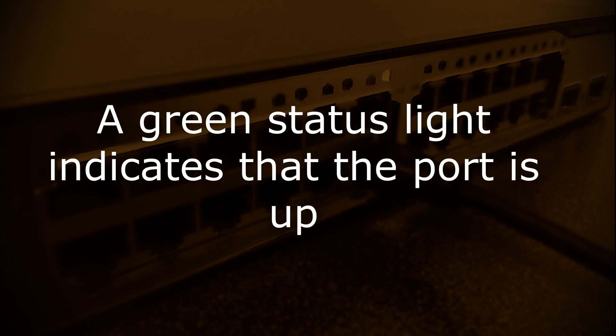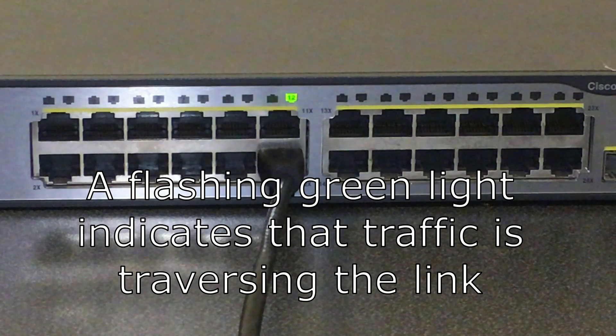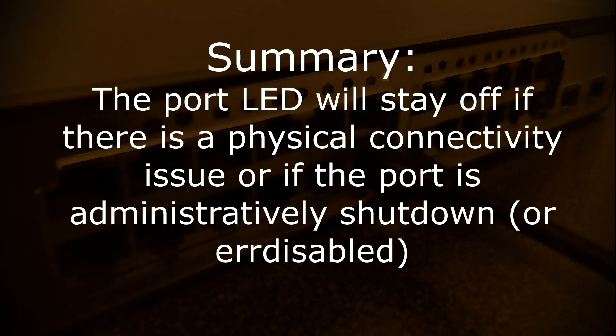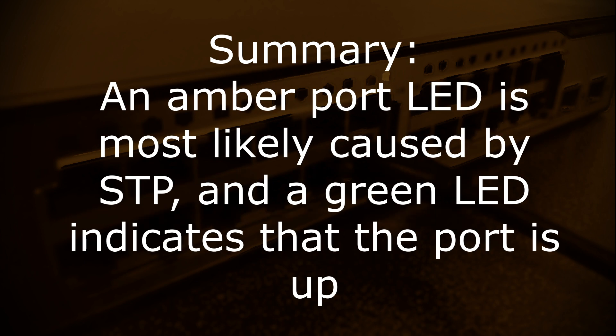So if there are no issues with the link, or if you've corrected any issues you had, the amber light should turn green, which indicates the port is fully up and ready to pass traffic. To recap: a link light or port LED will stay off if there is a physical connectivity issue or if the port is administratively shut down. It will typically be amber if there is a configuration issue or if spanning tree is blocking the port, and it will be green if the port is up. Thanks for viewing — please like and subscribe if you want to see more content.